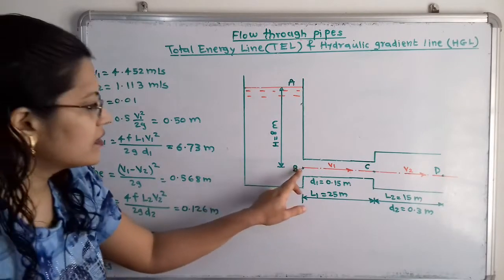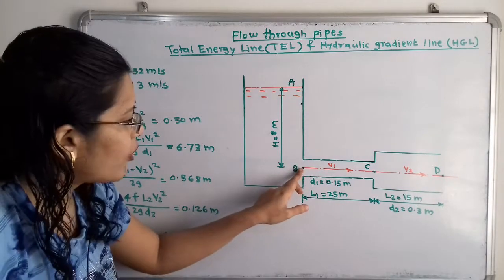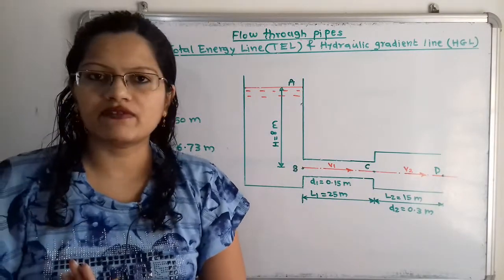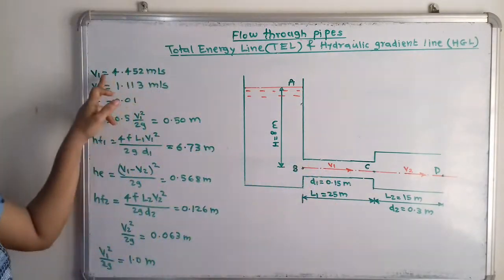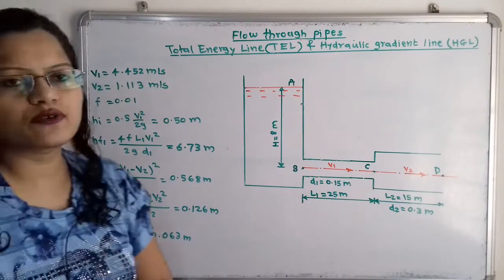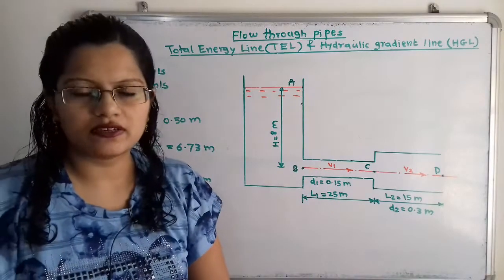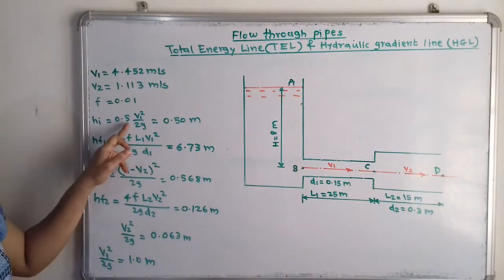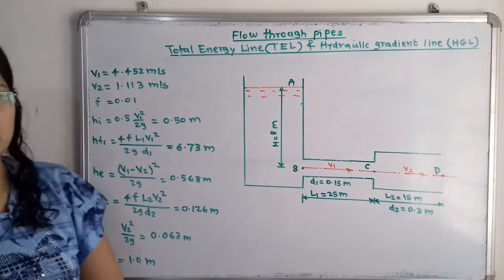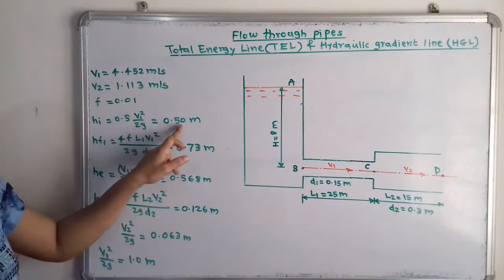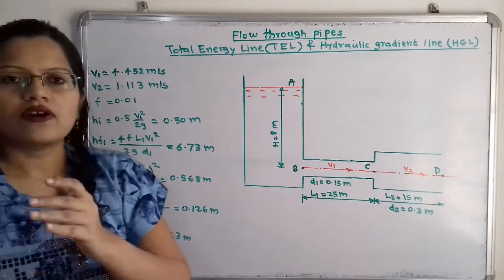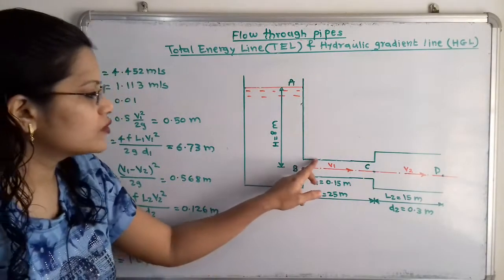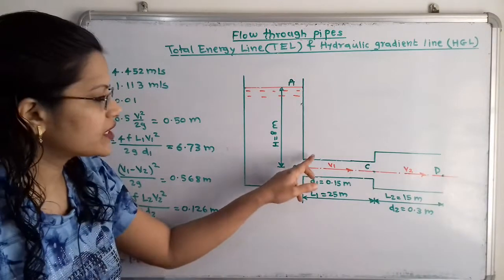When water in pipe one is flowing with velocity v1 = 4.452 m/s, for the calculation of hi we use the formula: hi = 0.4 × v1² / 2g, and the answer is 0.50 meters.